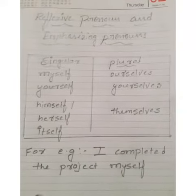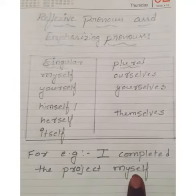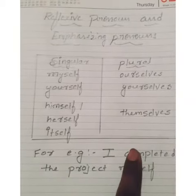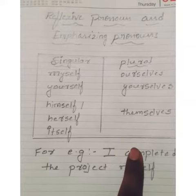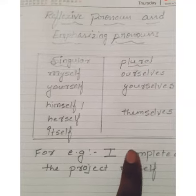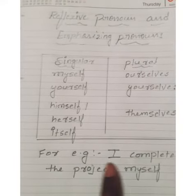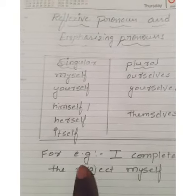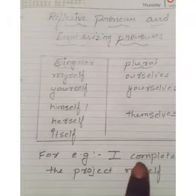For example: 'I completed the project myself.' Here, 'completed' is a verb, so reflexive pronouns always follow the verb.